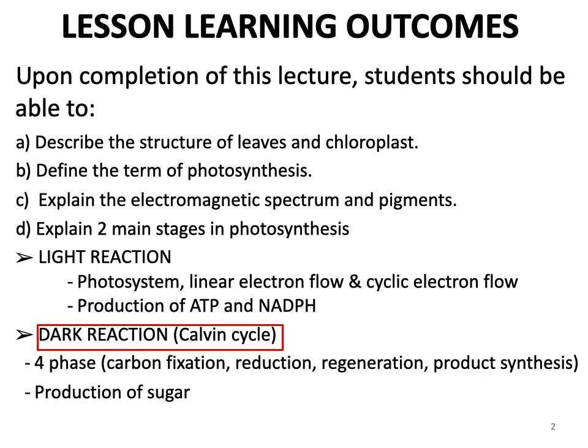So far, we have looked at the leaf structure, which also brought us to the microscopic structure of the chloroplast, as well as defining the photosynthesis process. And I also believe that in the previous video, you have learned about one of the main stages in photosynthesis, which is light reaction. So in this video, I will explain the subsequent process, which is dark reaction, also known as the Calvin cycle, or light independent reaction.